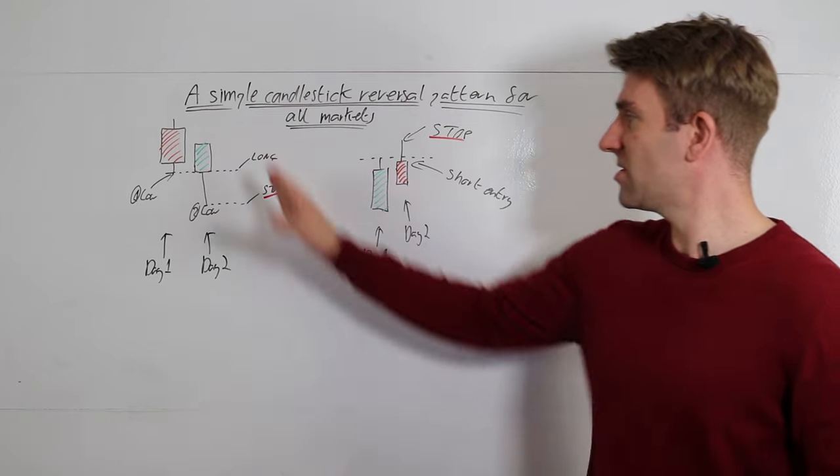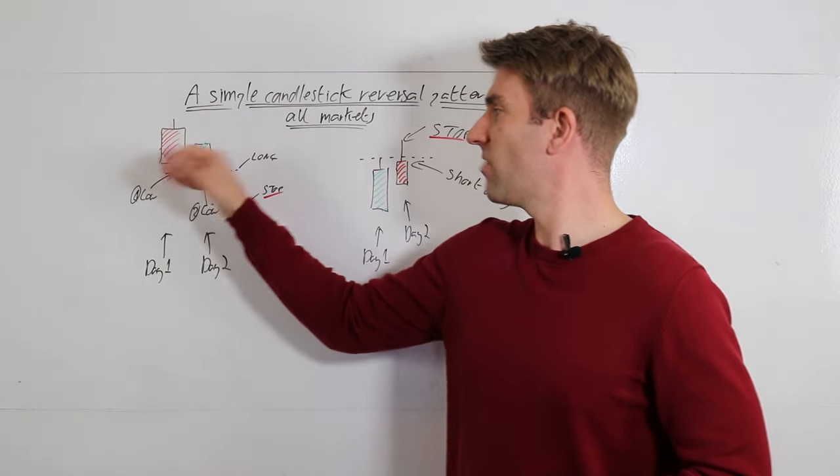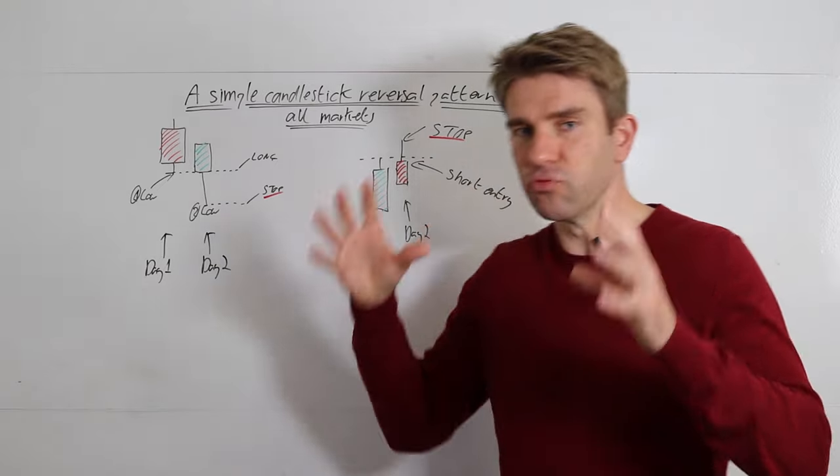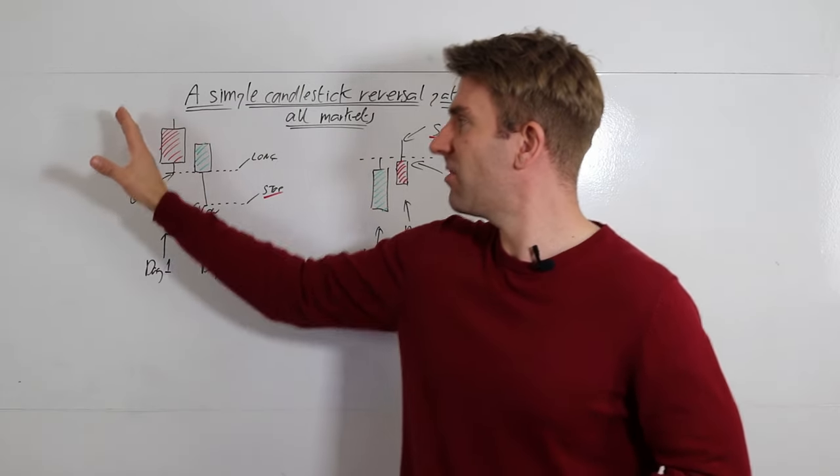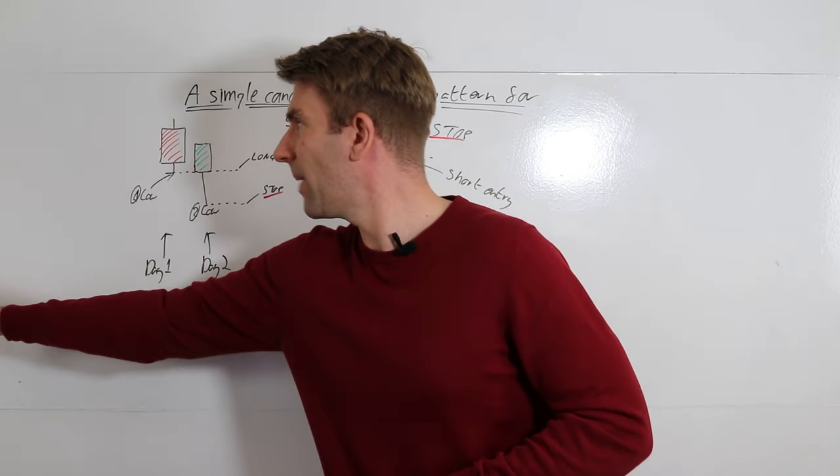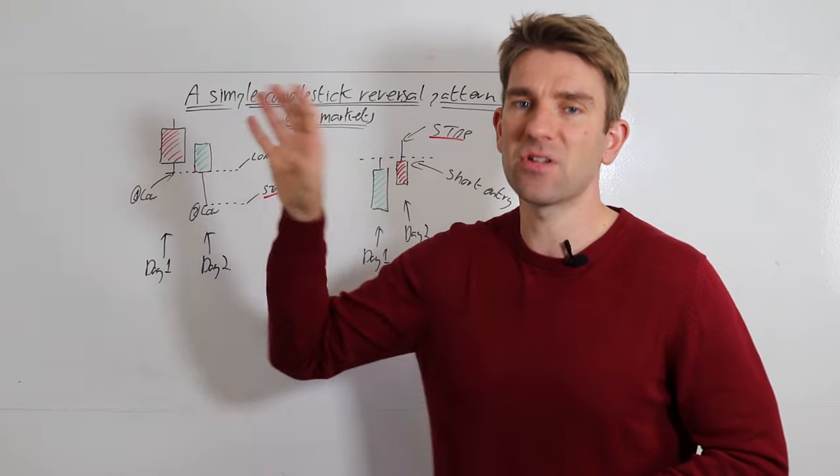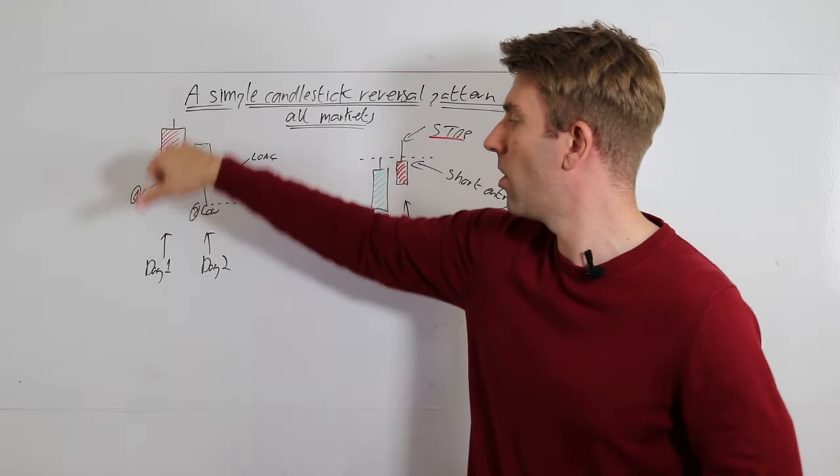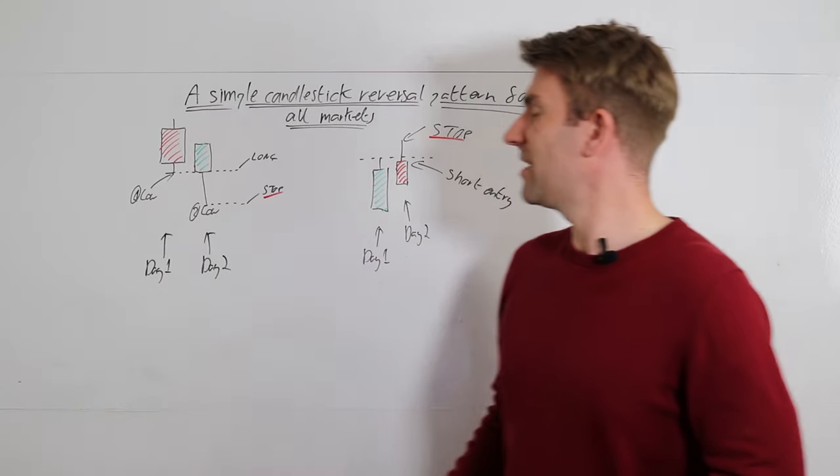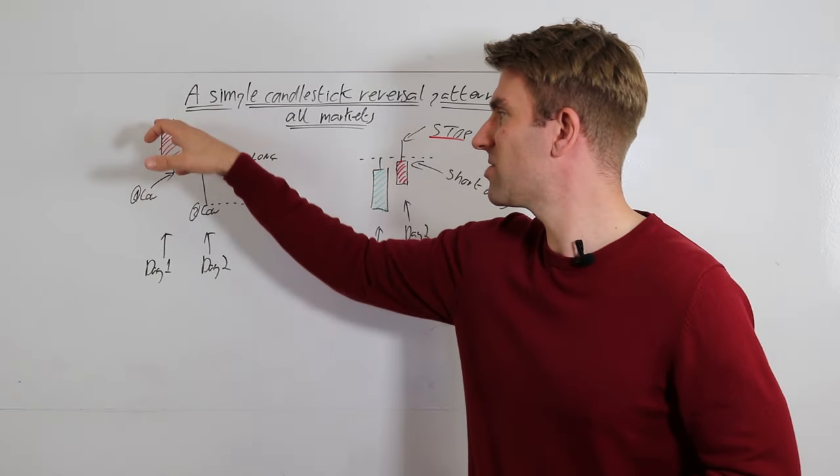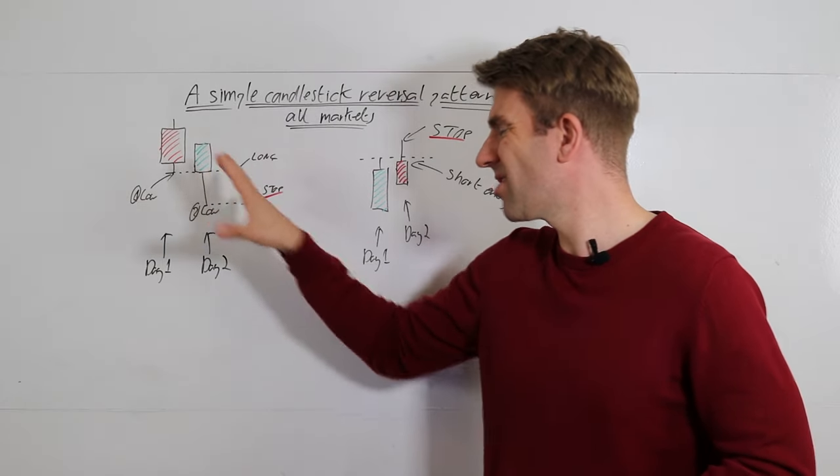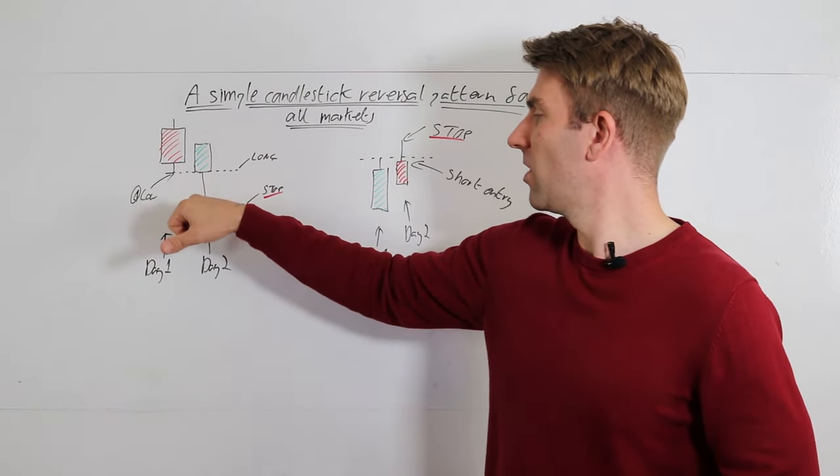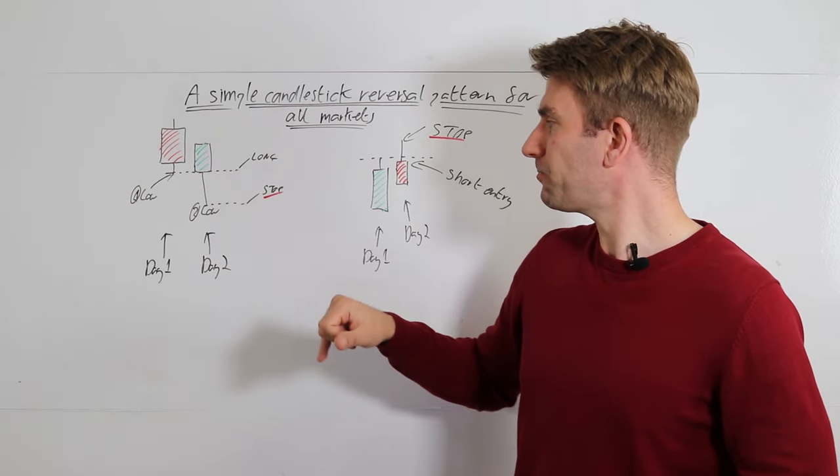So day one is this, day two is this, the same with talking about the short side. This is the long side reversal. We have day one, which is a red candle. Now there is stuff that has to come before this, and I don't want to go into too much detail in this video. I want to keep this kind of broad and just talk about this, but there's other things that happen on, let's say day minus one, minus two, minus three, all the way back that are going to make this effective or not. And it's going to depend on the market you trade. So we have day one, which is the red day and day two, which is the green day. Now it doesn't matter so much about the color of the candlestick.